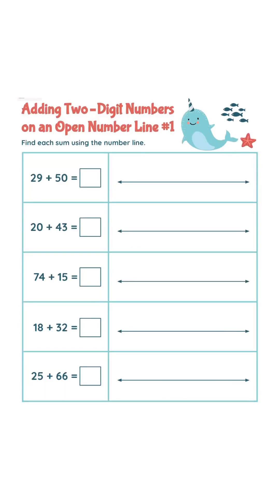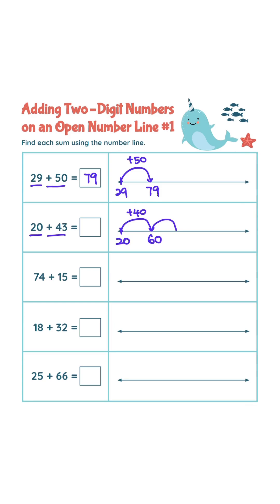29 plus 50. 29 plus 50 is 79. Answer is 79. 20 plus 43. 20 plus 40 is 60.